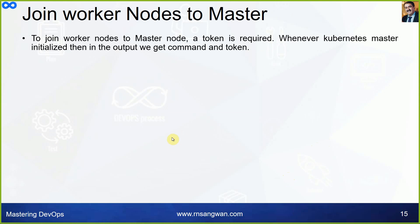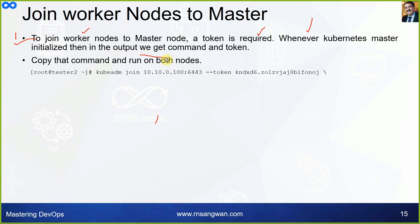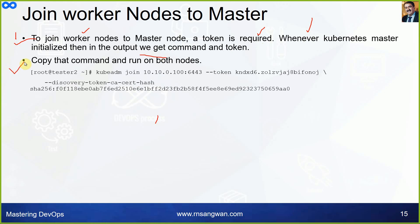The join command was displayed when we executed 'kubeadm init'. A token is required whenever the Kubernetes master is initialized — the output includes the join command. We need to execute this join command on the worker nodes, in our case tester one and tester two.